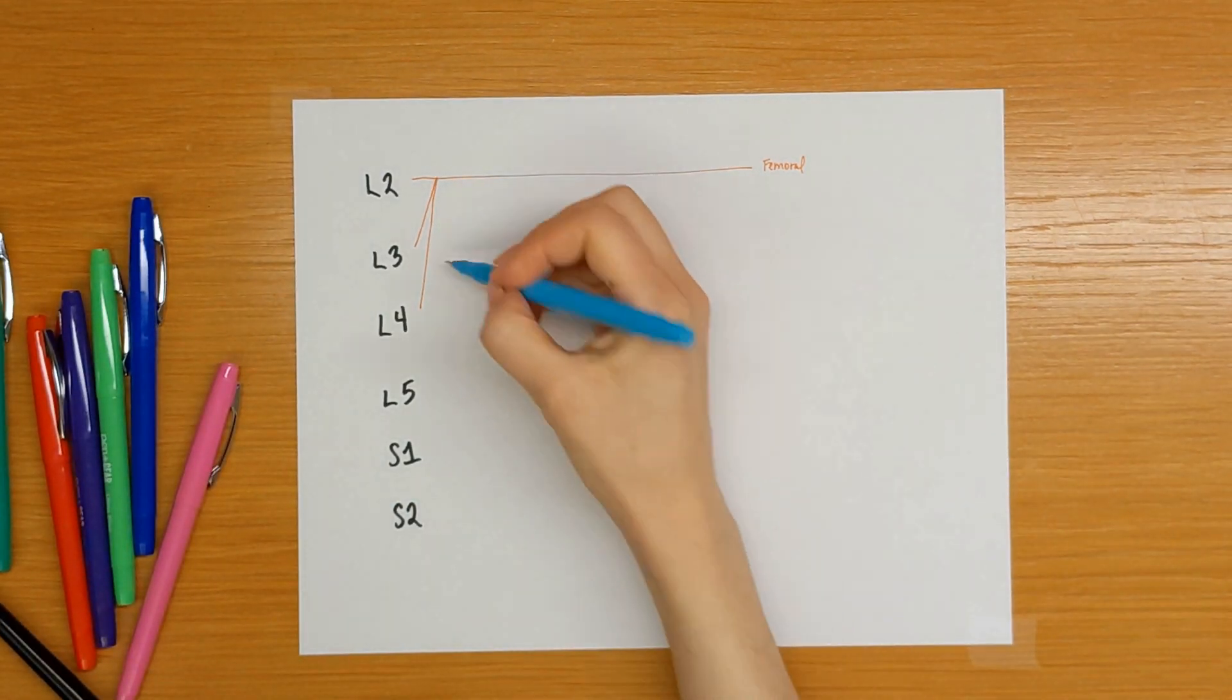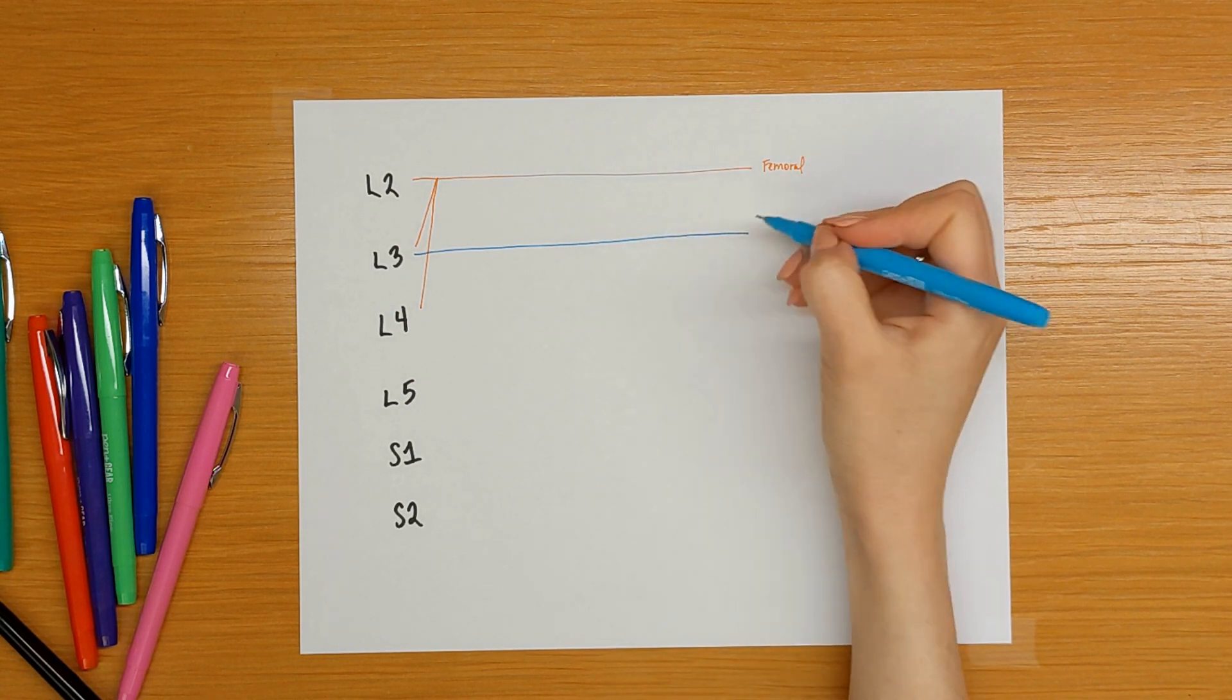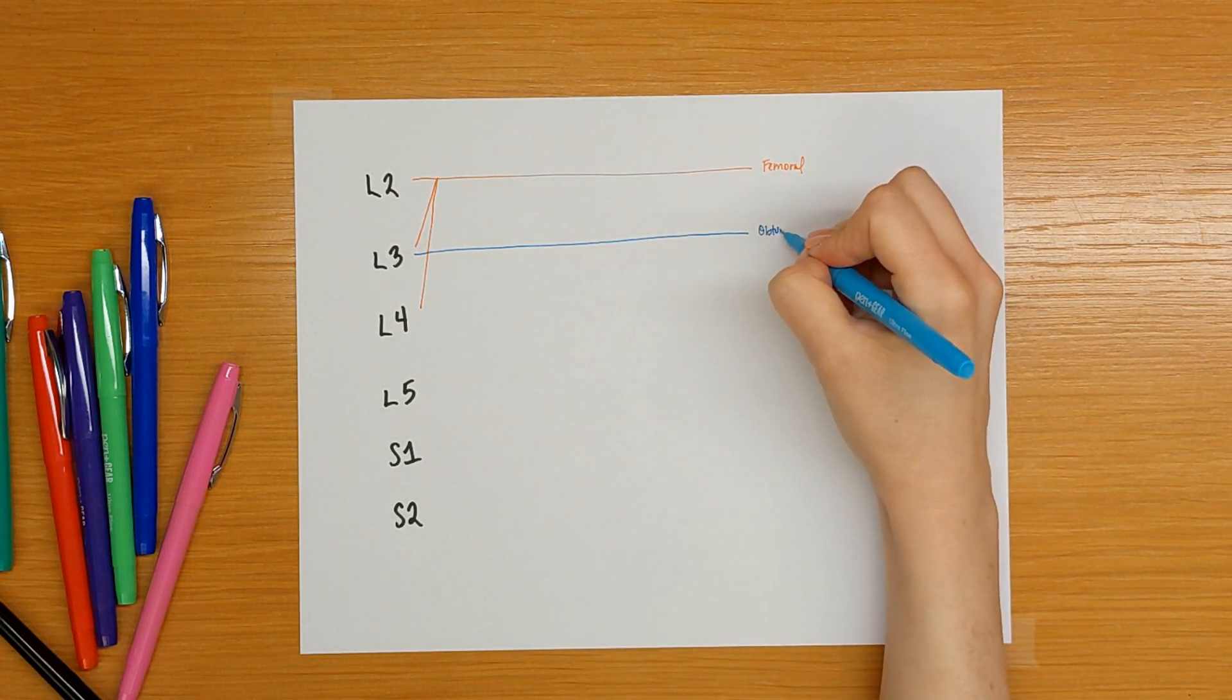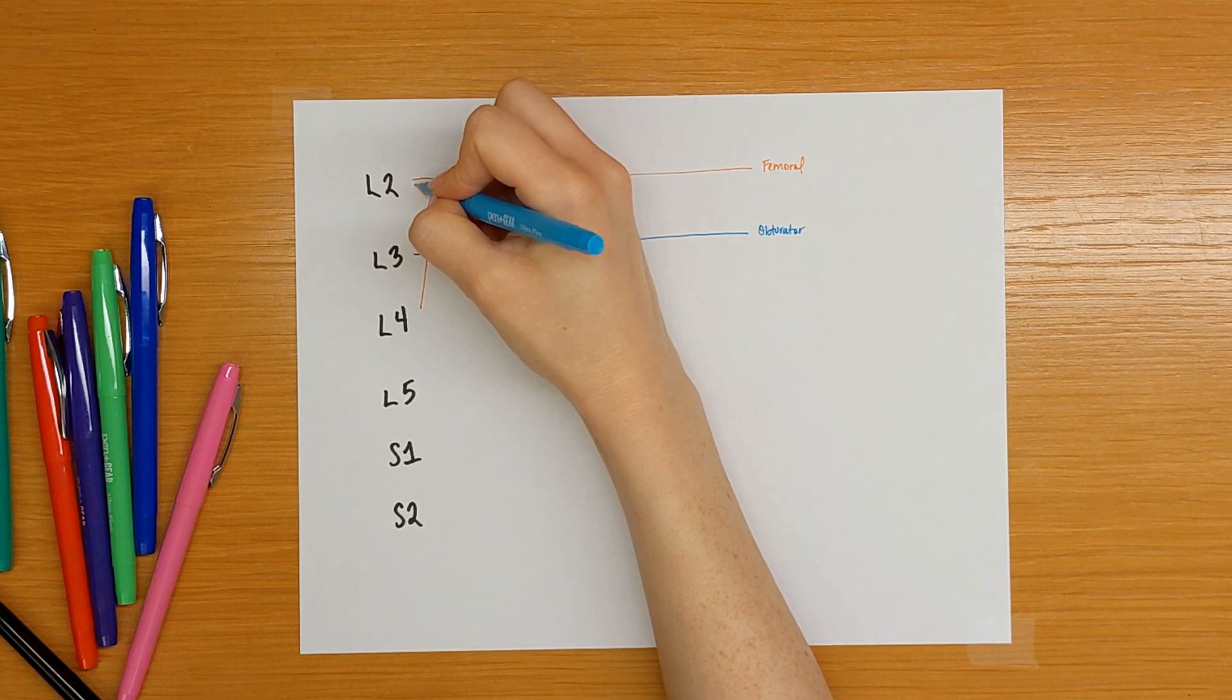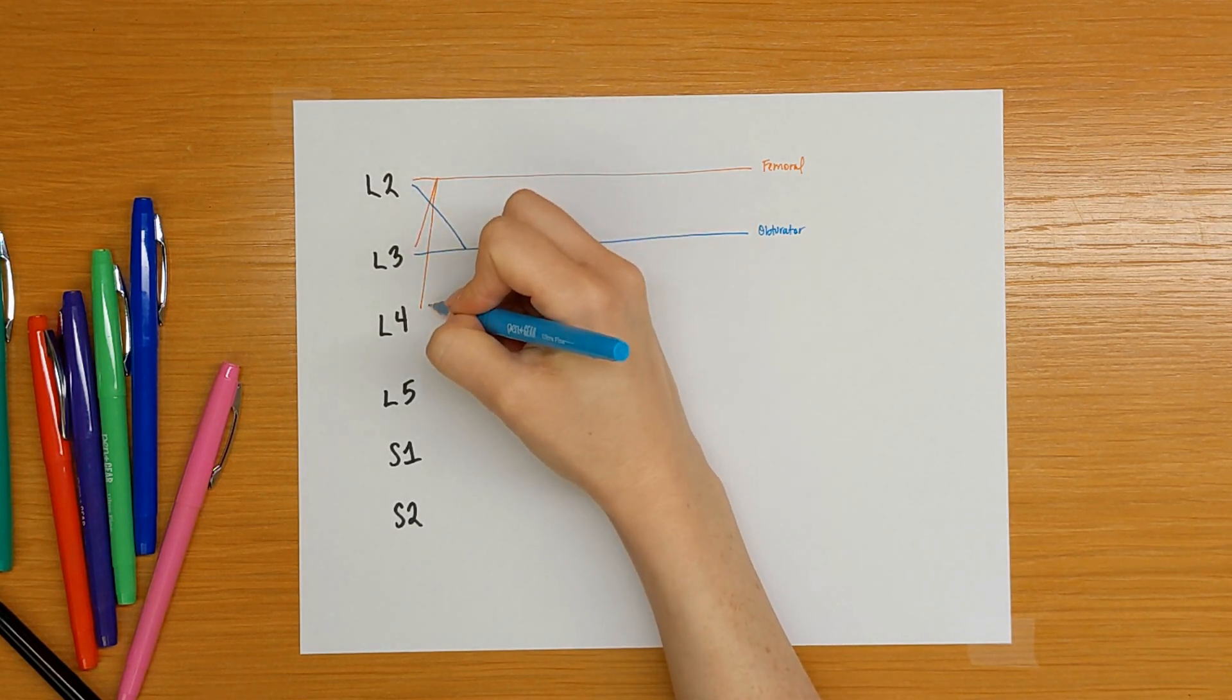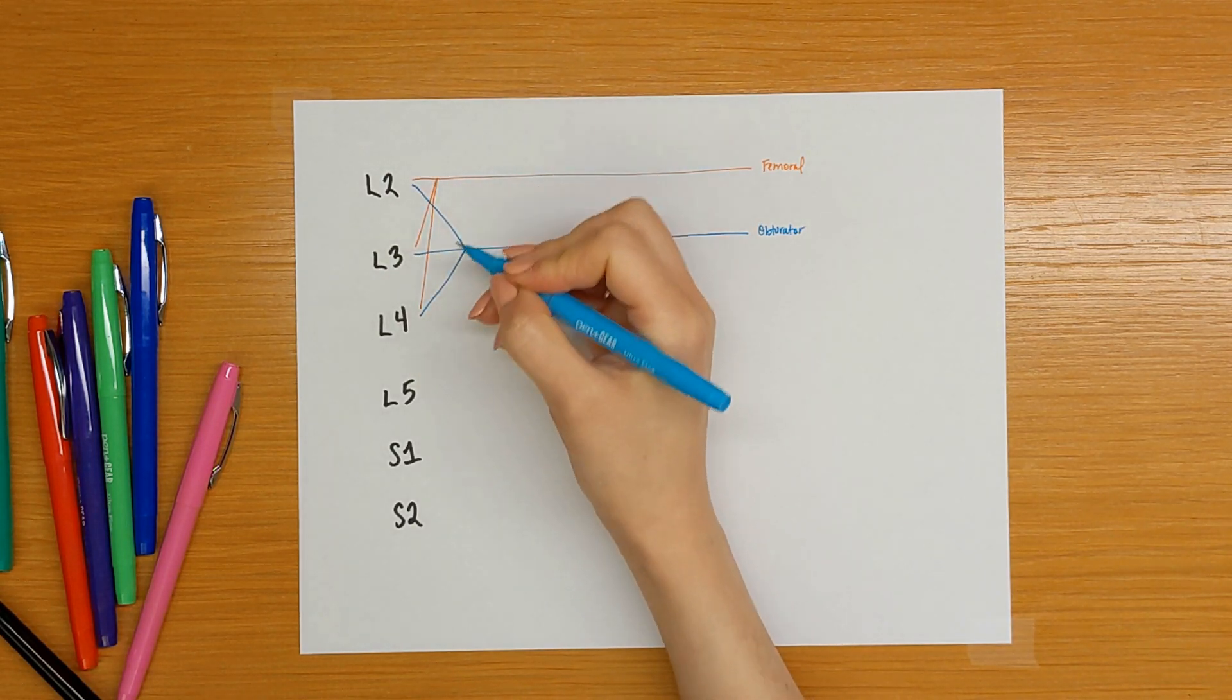The obturator nerve gets contributions from L2, L3, and L4.